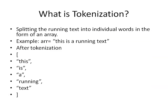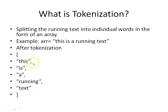So what is tokenization? Tokenization is splitting the running text into individual words in the form of an array. For example, given the string 'this is a running text', after tokenization the result will be all the words in that sentence returned as separate strings separated by commas in the form of a list. So from this single string we have generated multiple strings containing each word separately.